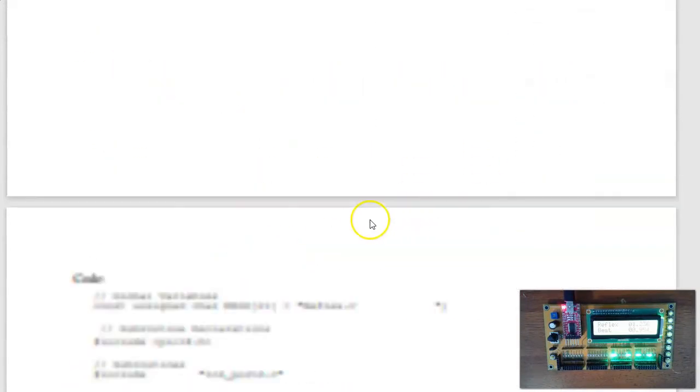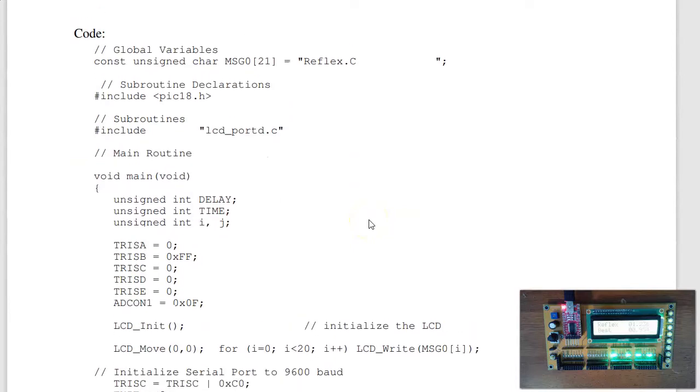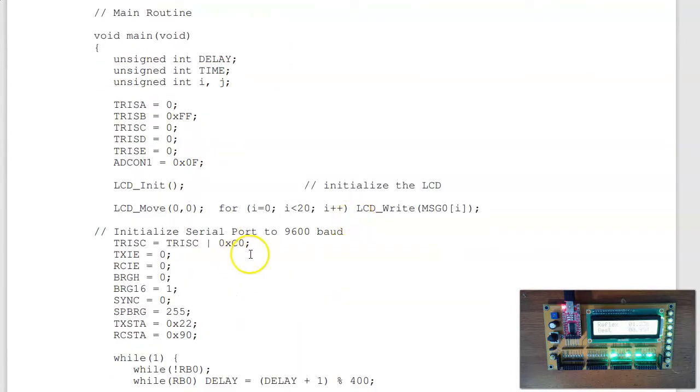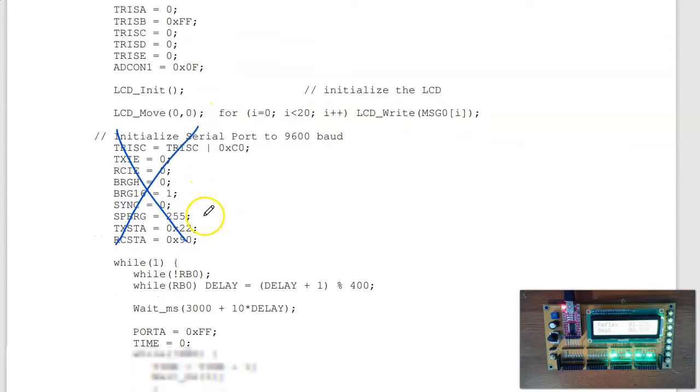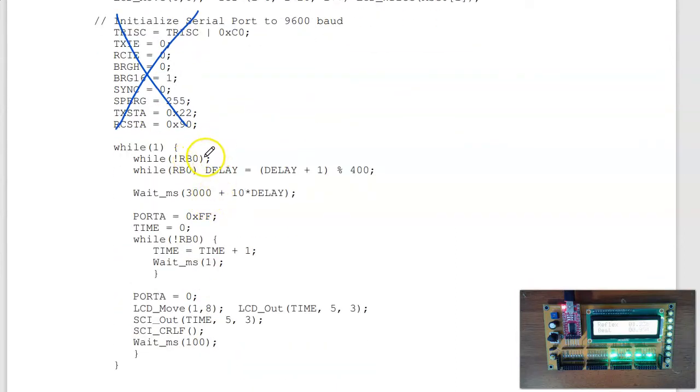Here's the code that I developed. Make port A output, port B input. Turn on the LCD display. And then here's the main loop. I'm going to wait for you to hit RB0. So this is my button, RB0. Spin your wheels until you push the button. While the button is being pushed, count really fast, mod 400. When I release, delay is a random number between 0 and 399.